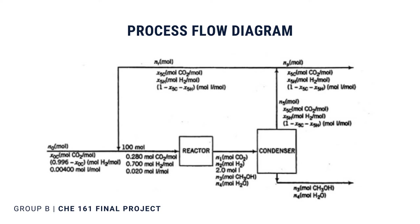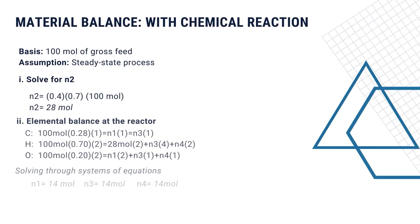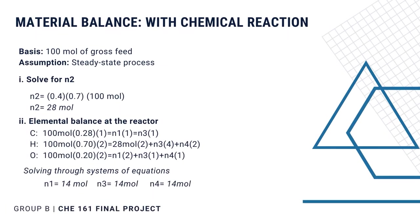But first, we need to solve for the molar flow rate and composition of the fresh feed. In this problem, the reactor effluent is the gross product of the process. We have a basis of 100 moles of gross feed and assume a steady-state process. First, we'll solve for N2. Second, we need to perform an elemental balance at the reactor. Solving through systems of equations and substitution, we solve for N1, N3, and N4.